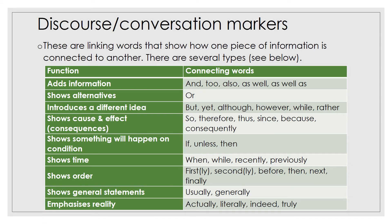Discourse or conversation markers are linking words that show how one piece of information is connected to another. There are several types with several functions — for example, adding information, showing alternatives, introducing a different idea, showing cause and effect, showing something will happen on condition, showing time, showing order, showing general statements, and emphasizing reality. The table shows the connecting words for each category.